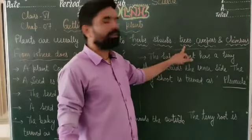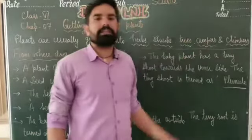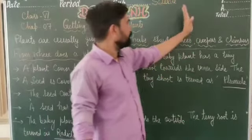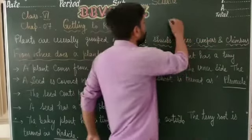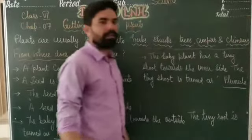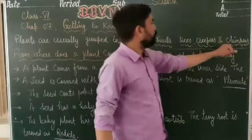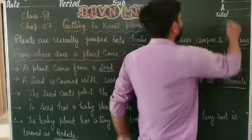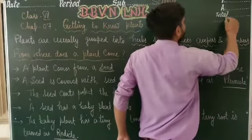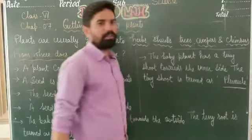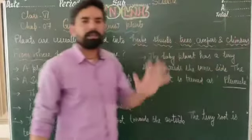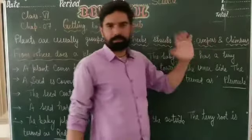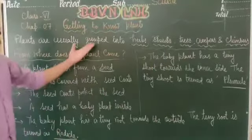Shrubs वो plants होते हैं जिनका stem थोड़ा woody होता है। Creepers क्या होते हैं — they cannot stand erect on the land, वो सीधे खड़े नहीं रह सकते, तो वो land पर creep या crawl करते हैं। Climbers किसी दूसरे plant का support लेकर उस पर climb कर जाते हैं। So five categories: herbs, shrubs, trees, climbers, and creepers।